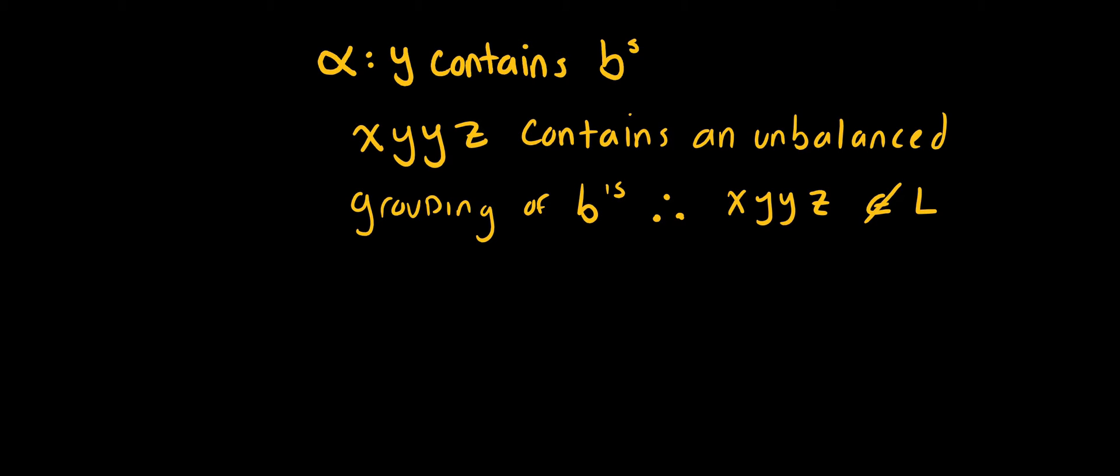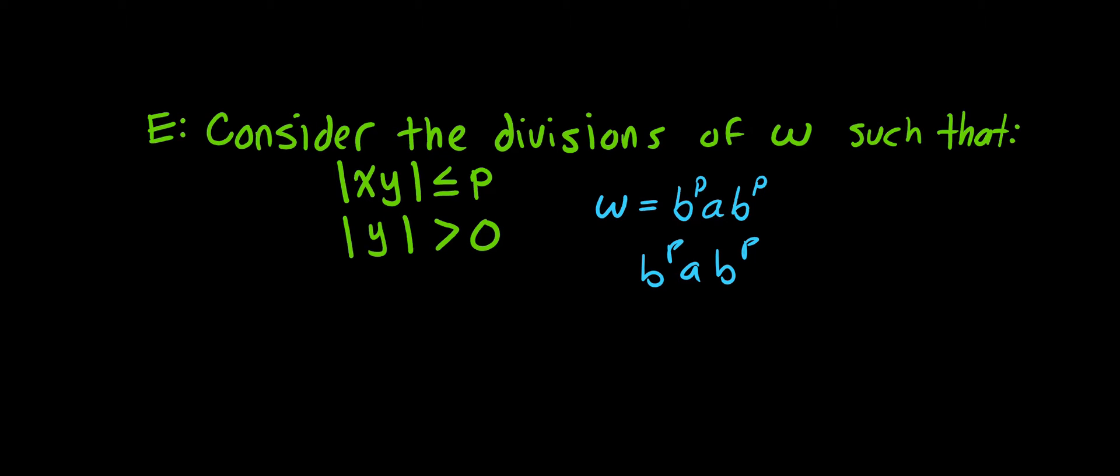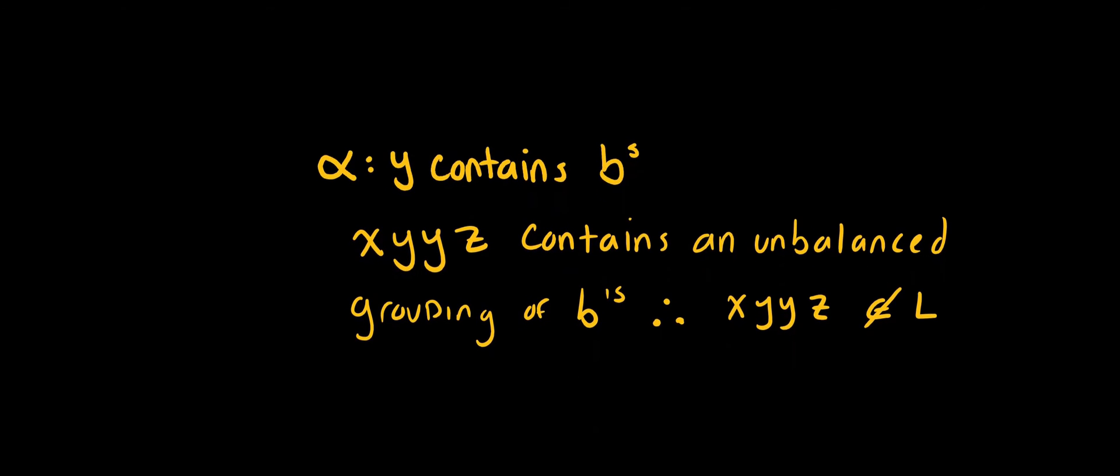So are there any other cases that we need to consider? Well, we need to consider every case that holds true for these conditions, that the length of XY is less than or equal to P, and the length of Y is greater than 0. But if we look at our string B^P A B^P, if we choose A and BP as our Y, then that breaks our first condition. And if we choose just A as our Y, then that breaks our first condition again. And so really, we're done with the proof. We don't have to prove any other cases.